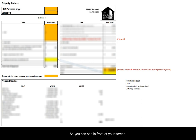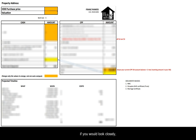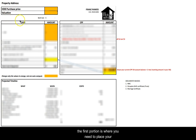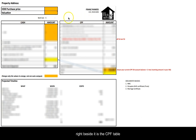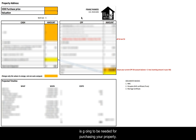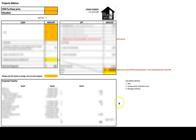As you can see on screen, I have a Google Sheet which I prepared for all my client buyers. If you look closely, you'll find that this table is broken into several parts. The first portion is where you place your projected purchase price, then there is a cash table where you key in the cash component of the purchase. Right beside it is the CPF table, which tells you how much CPF is going to be needed for purchasing your property. I've also prepared a projected timeline on the table below, which tells you what items you need to prepare for, when you need them, and how much they will cost.